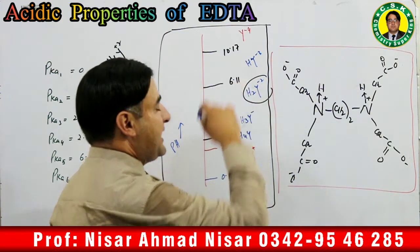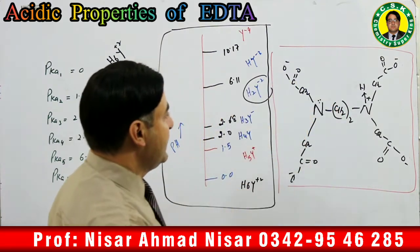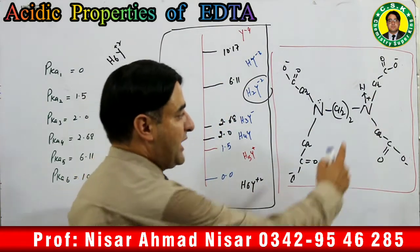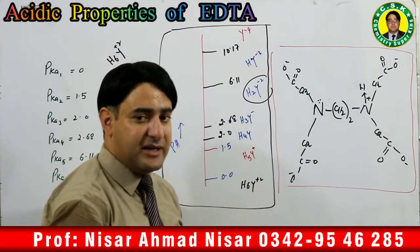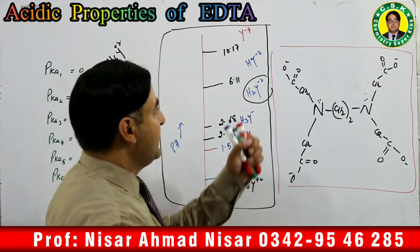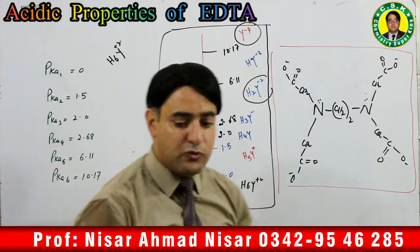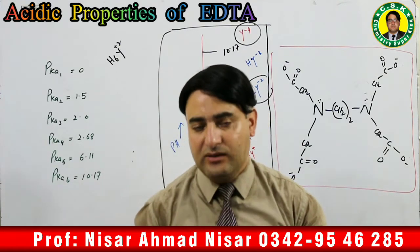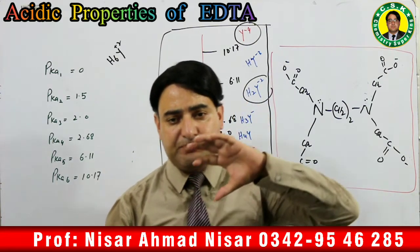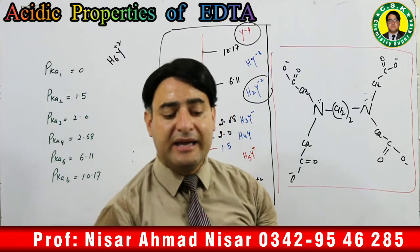When pH is between 6.11 and 10.17, one proton remains and the species is HY³⁻. When pH exceeds 10.17, the last proton is removed and no protons remain — only 4 negative charges — giving Y⁴⁻. Remember: at pH greater than 12, Y⁴⁻ becomes the only significant form of EDTA — it is completely deprotonated. Therefore, the form of EDTA that exists depends on the pH of the medium.